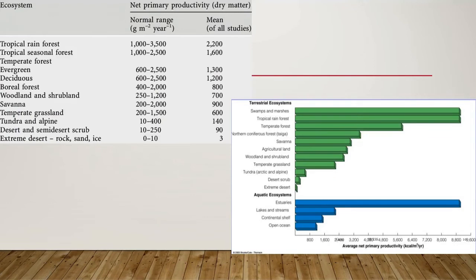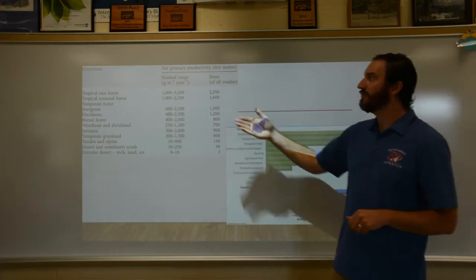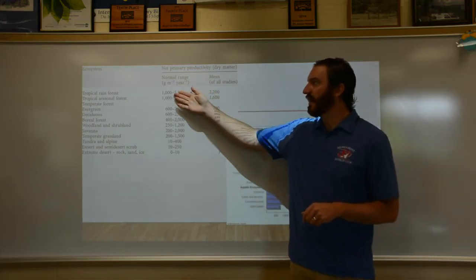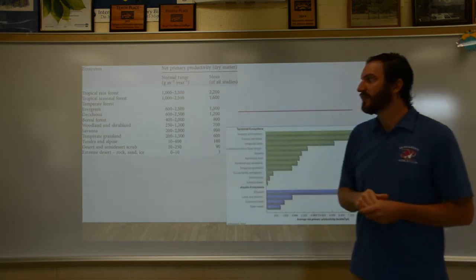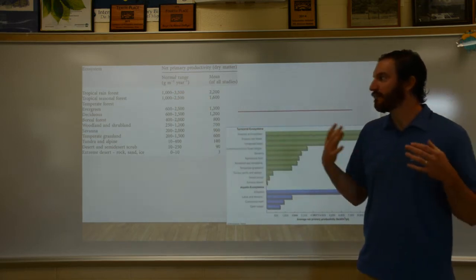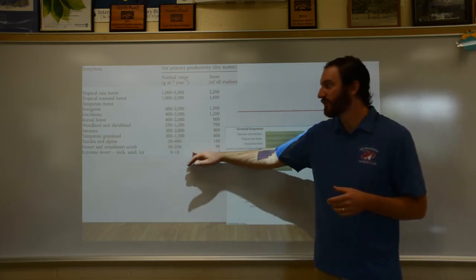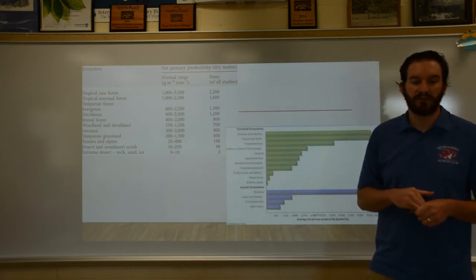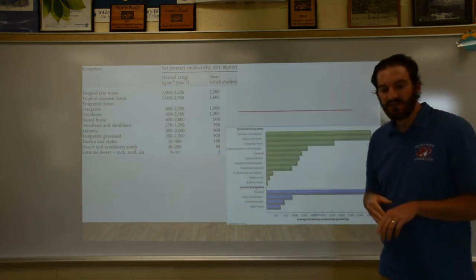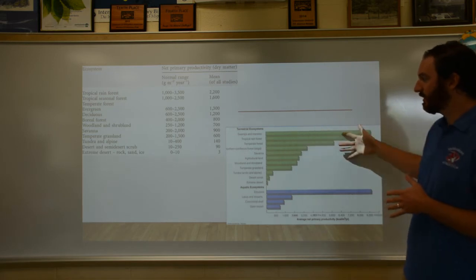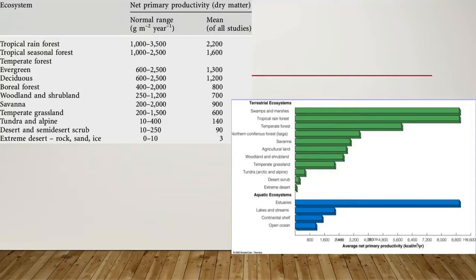Here we can compare the productivity of different biomes. On the top left chart you can see tropical rainforests and tropical seasonal forests with the highest productivity, all the way down to lower productivity ecosystems like deserts at the extreme low end. Another chart shows terrestrial ecosystems in green and aquatic ecosystems in blue.